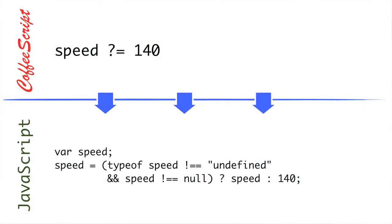Another form of this is using the question mark equal operator, which will only set the value on the right-hand side of the operator if speed is either undefined or null. So this is a great way to assign things if you don't want to overwrite an existing value.